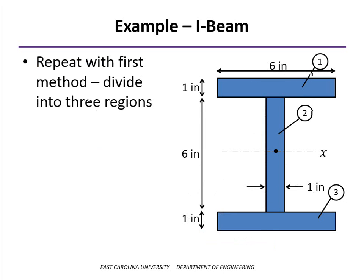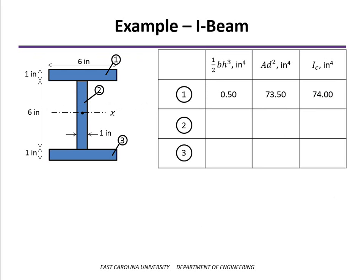If we did this by the other method, dividing it up into three regions, we do get a little bit more insight. When we look at each of the flanges, we see that the 1/12 bh³ term is very small, but the Ad² term is quite large. And the two flanges, those values are exactly the same.